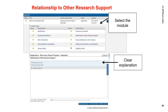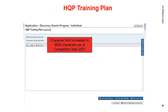Let's move on to the Relationship to Other Research Support module. Please follow the instructions and input appropriate information in the free form box — up to 12,000 characters — to clearly explain funding applied for or held from other sources. For support from the Canadian Institutes of Health Research (CIHR) and/or the Social Sciences and Humanities Research Council (SSHRC), remember to upload an attachment with summary and budget pages. Let's move on to the HQP Training Plan module — describe your plans for training highly qualified personnel. Note that the character limit has increased to 9,000 characters for competition year 2021. Click save and validate, then save and next to proceed.